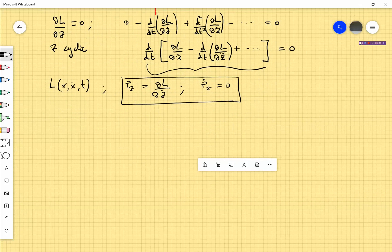There are other possible conservation laws. For instance, if the Lagrangian is time independent, so we have a Lagrangian that only depends on x and x dot, you take the partial derivative of L to get zero.